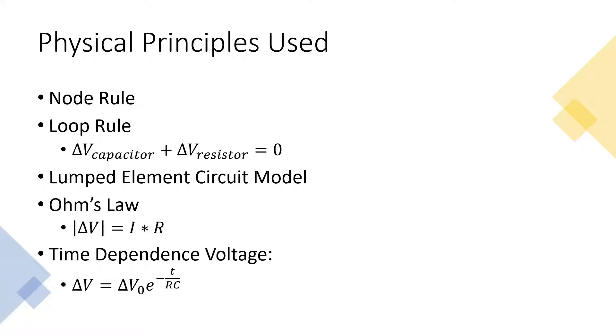The node rule explains conservation of current through a circuit. The amount of current that goes in one wire should be the same amount of current that returns out the end. If a wire is split into two wires, the amount of current in those two wires should sum up to the current in the original one wire.